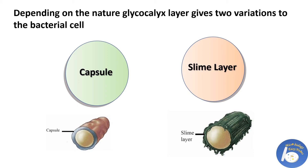Depending on its nature, the glycocalyx layer gives two variations to the bacterial cell: one is the capsule and the other is the slime layer.